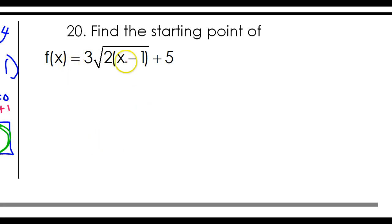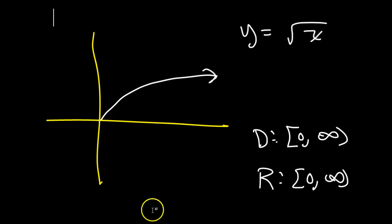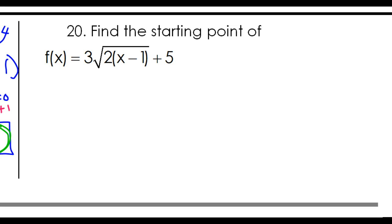In this video, we will find the starting point of a radical function. Remembering that the parent function y equals the square root of x starts here at zero comma zero, and further remembering that horizontal compressions or stretches and vertical stretches or compressions will not affect the starting point.